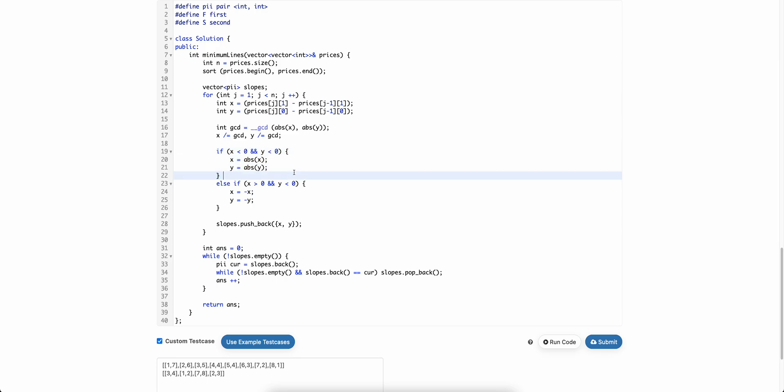Now, if both of them are negative, we will make both of them as positive. If x is positive and y is negative, we will make the opposite. We will always make x as negative and y as positive. And we will simply push this slope into the slopes array.